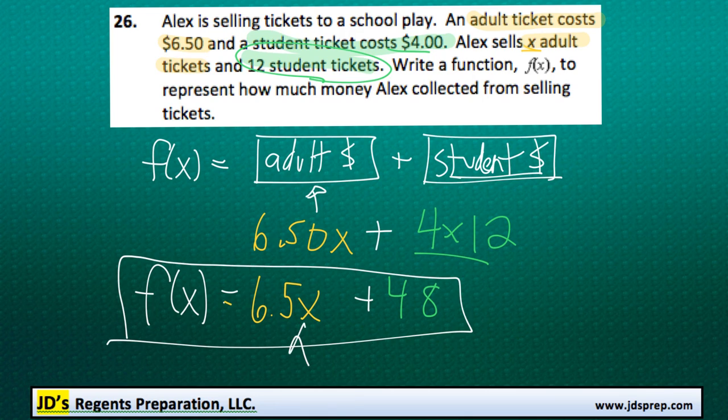So again, the 6.5X represents the amount of money earned from adult tickets, and the 48 is the amount of money he earned from selling the student tickets. So I hope that makes sense. And that's all for this video. Thanks for visiting JD's Regents Preparation.